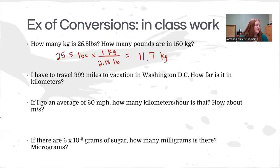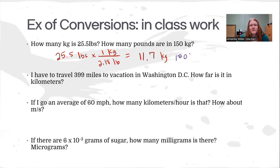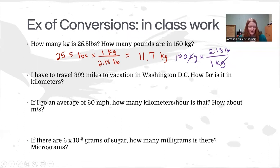The next question on the same line asks us to convert 150 kilograms to pounds using the same conversion factor, but flipped over. It's still one kilogram for every 2.18 pounds, but now I need the kilograms to cancel, so this time I multiply. That gives us 327 pounds.